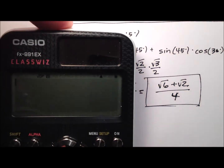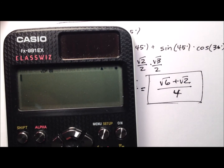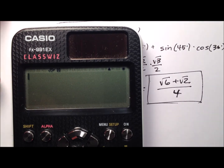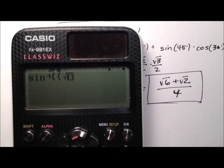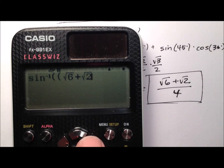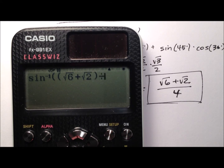Let me grab the calculator and show that this works out. We'll do it by finding the inverse sine and put that ratio in. So the numerator is the square root of 6 plus the square root of 2, divided by 4 — close up that inverse sine — and equals. And there we have 75 degrees.